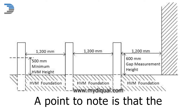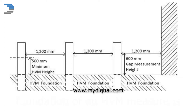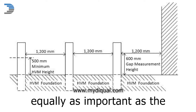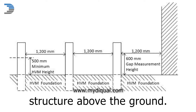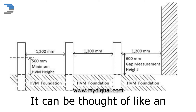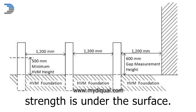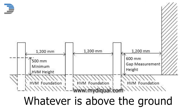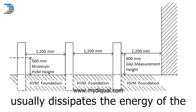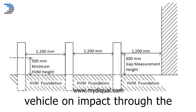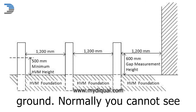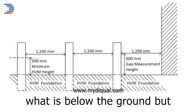A point to note is that the foundation of an HVM measure is equally as important as the structure above the ground. It can be thought of like an iceberg, in that most of the strength is under the surface. Whatever is above the ground usually dissipates the energy of the vehicle on impact, through the ground.